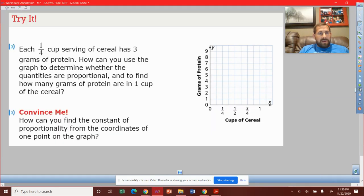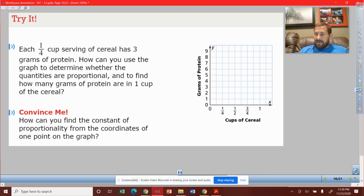Go ahead and try it now for yourself. This was the try problem. Each one-fourth cup of cereal has three grams of protein. How can you use this graph to determine whether the quantities are proportional and to find how many grams of protein are in one cup?